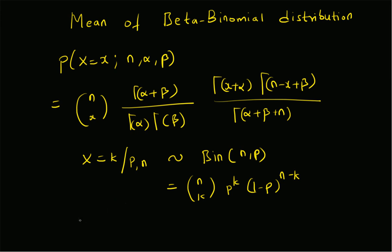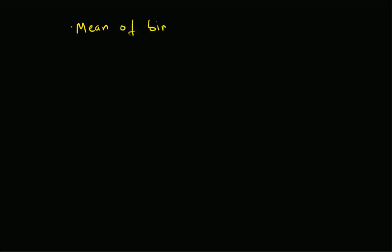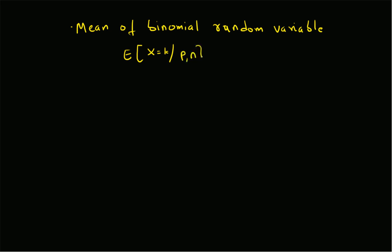That is the definition of the conditional variable's probability mass function. Our goal is to find the expectation of x. Recall that the mean of a binomial random variable — that is, the conditional mean E[x = k | p, n] — is simply n times p. Since x equal to k given p and n is a binomial random variable, its mean is simply n times p.